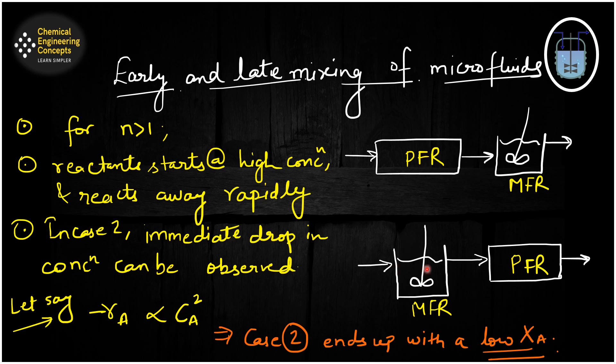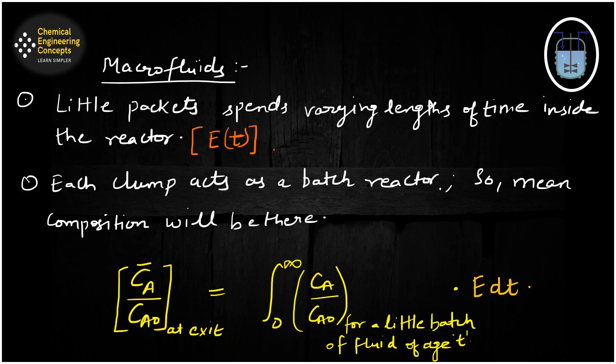In case two, because the MFR is on the first half, there will be an immediate drop in concentration. That is why for case two you will end up with a lower conversion. This shows that mixing patterns are really very important when it comes to the type of fluid.